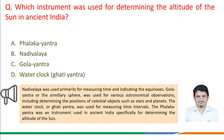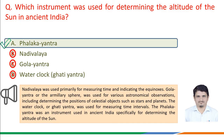Gola Yantra, or the armillary sphere, was used for various astronomical observations including determining the positions of celestial objects such as stars and planets. The water clock or Gati Yantra was used for measuring time intervals. The Phalak Yantra was an instrument used in ancient India specifically for determining the altitude of the sun. Therefore, the correct answer is option a: Phalak Yantra.